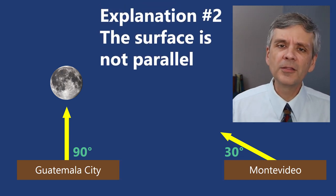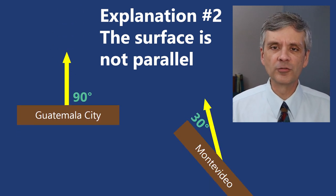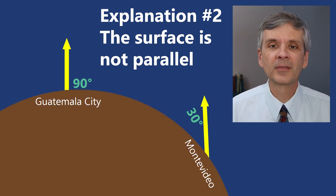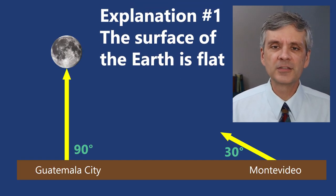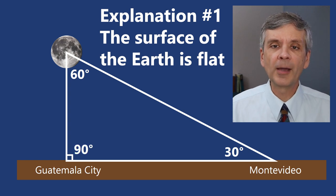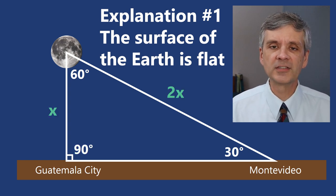Or two, in those two cities the surface of the ground itself tilts different directions and is not parallel. Let's look at the first explanation. Drawing this on a flat surface, this makes a nice 30-60-90 right triangle with a hypotenuse twice as long as the shortest side.